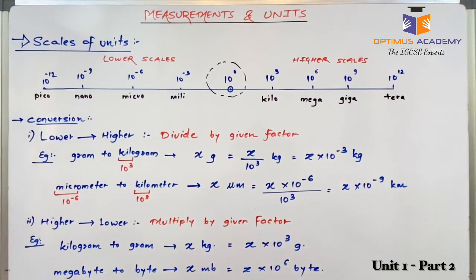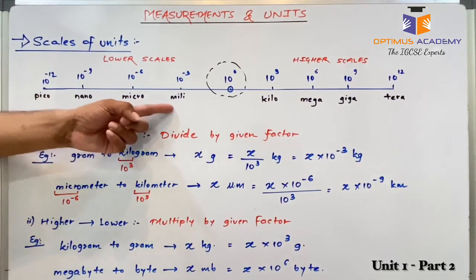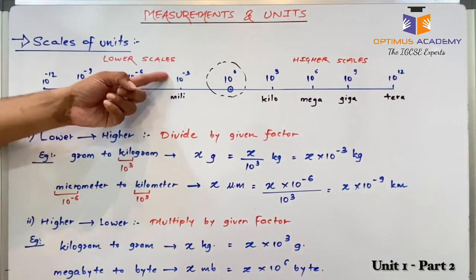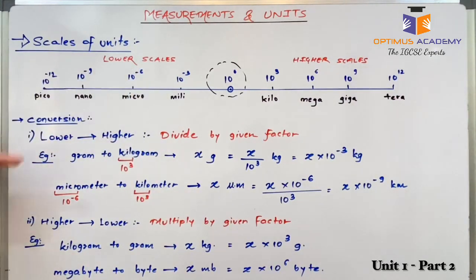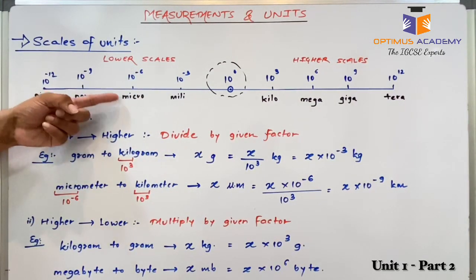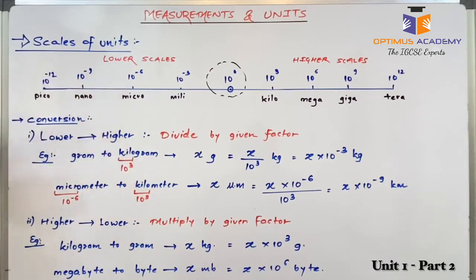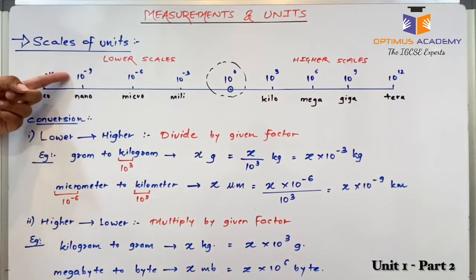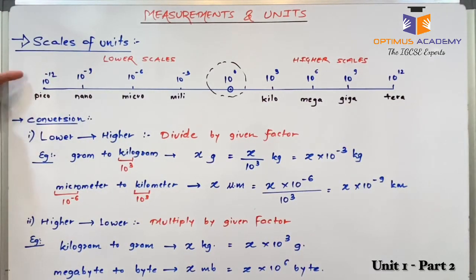On the lower side, we have lower prefixes: milli, that is 10 raised to minus 3; micro, 10 raised to minus 6; nano, 10 raised to minus 9; and pico, that is 10 raised to minus 12.